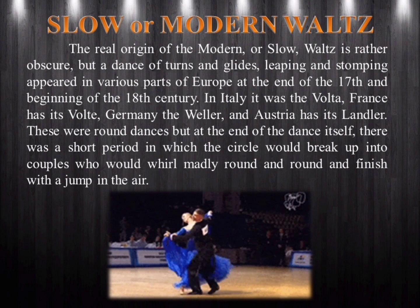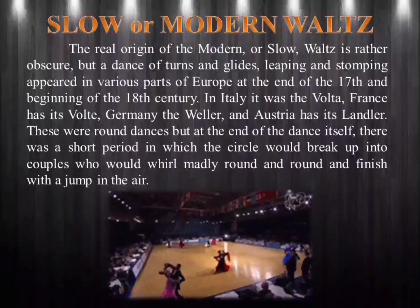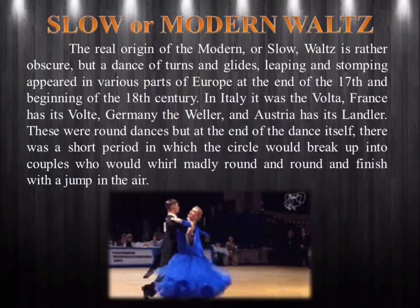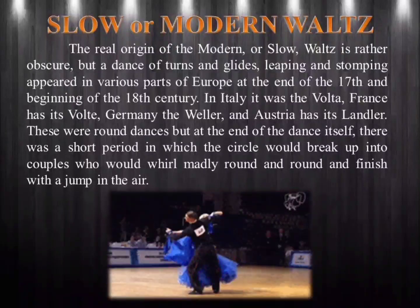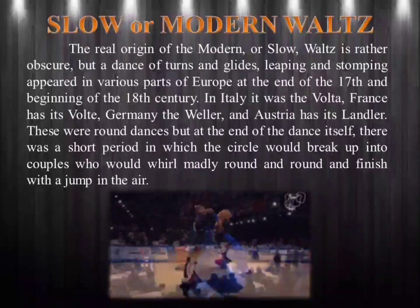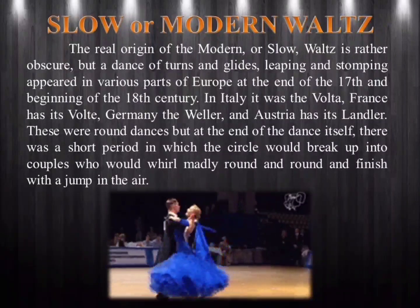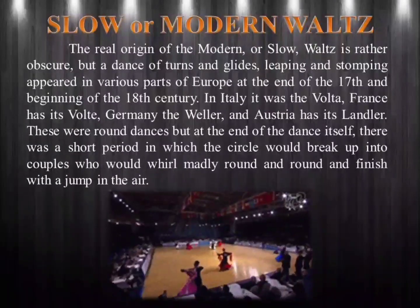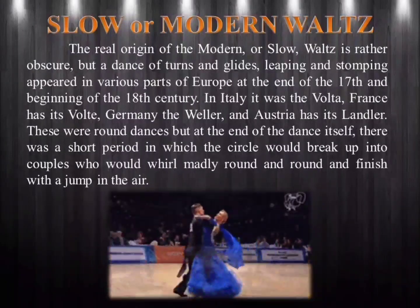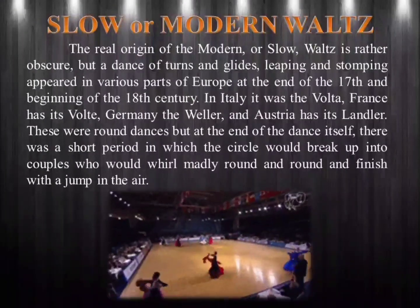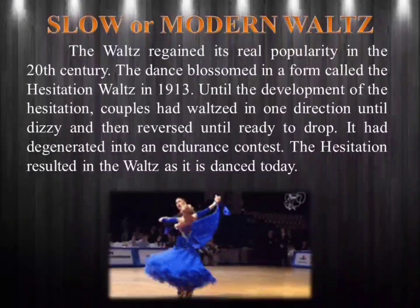Slow or Modern Waltz. The real origin of the modern, or slow, waltz is rather obscure, but a dance of turns and glides, leaping, and stomping appeared in various parts of Europe at the end of the 17th and beginning of the 18th century. In Italy it was the Volta, France had its Volta, Germany the Weller, and Austria its Landler. These were round dances, but at the end of the dance, the circle would break up into couples who would whirl madly round and round and finish with a jump in the air.